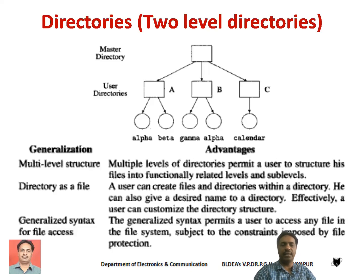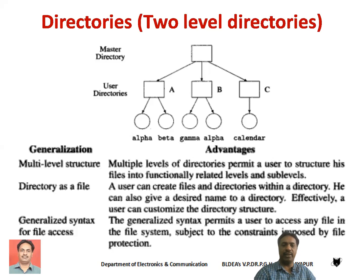In the next topic we are going to learn about the types of directories supported by different operating systems. Directories may be classified into three different types: the first is two-level directories, then we can have a tree-structured directory, and the third is referred to as a graph directory.